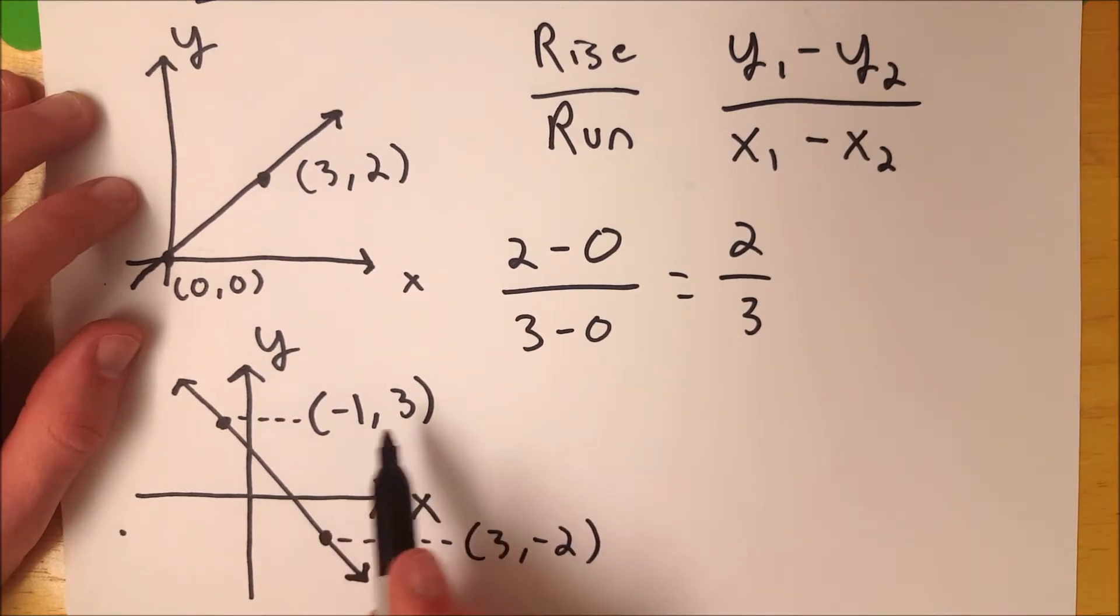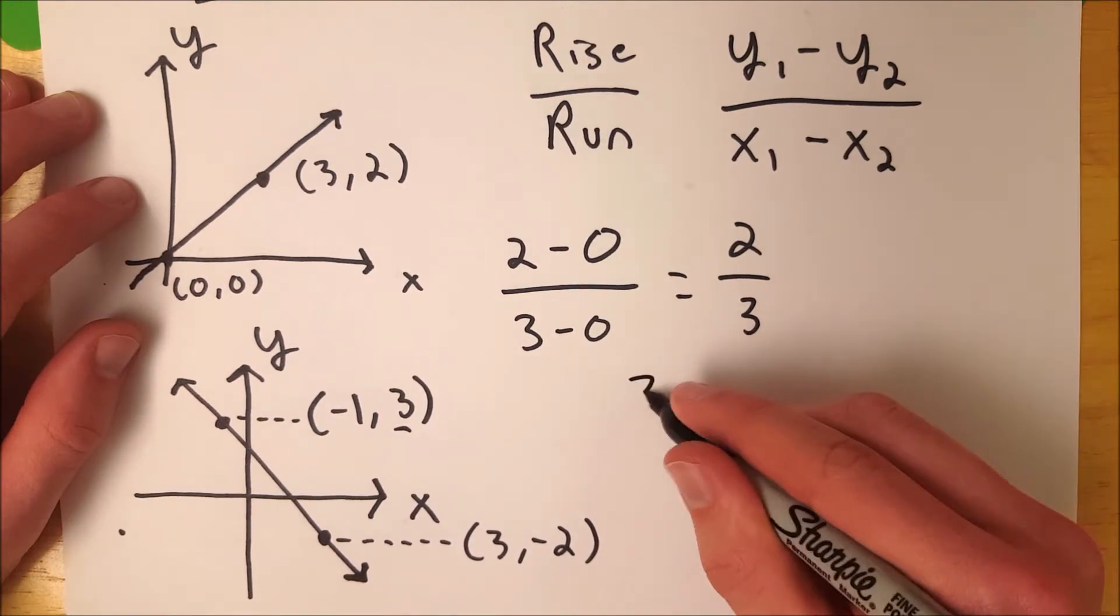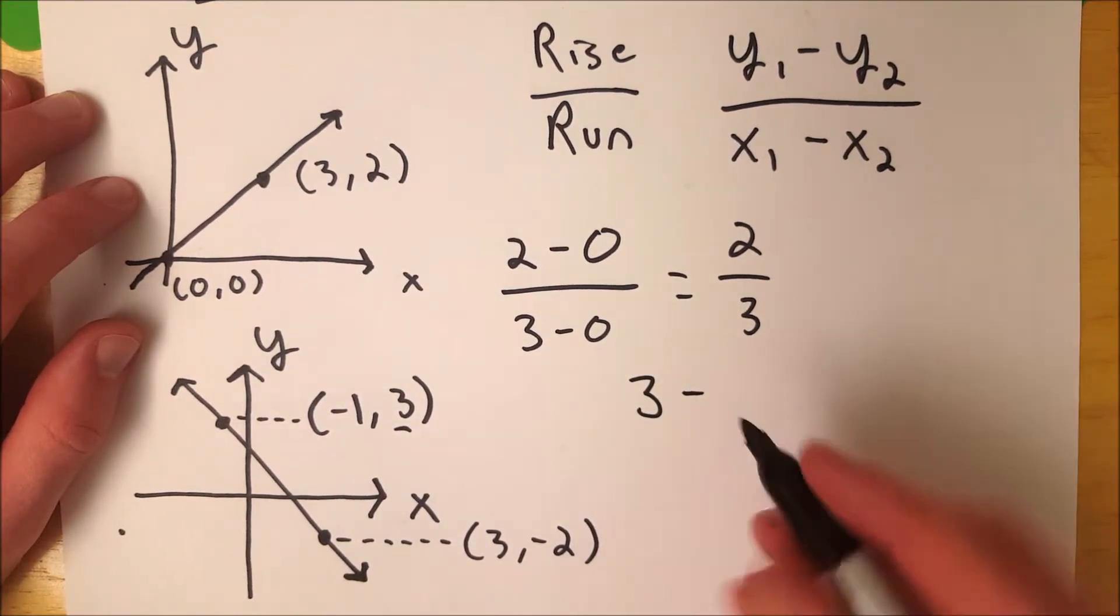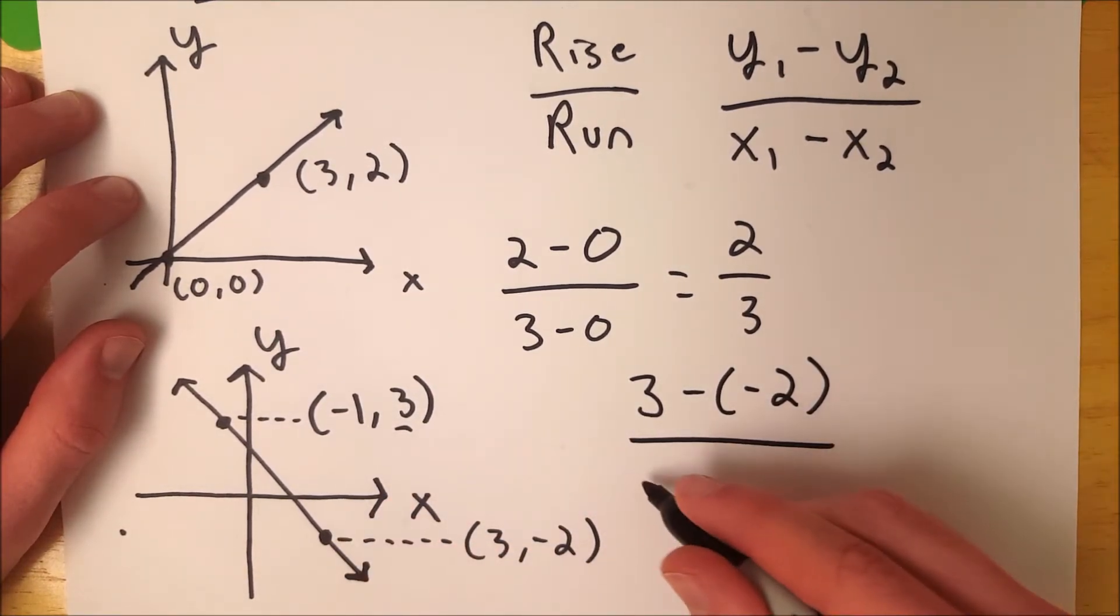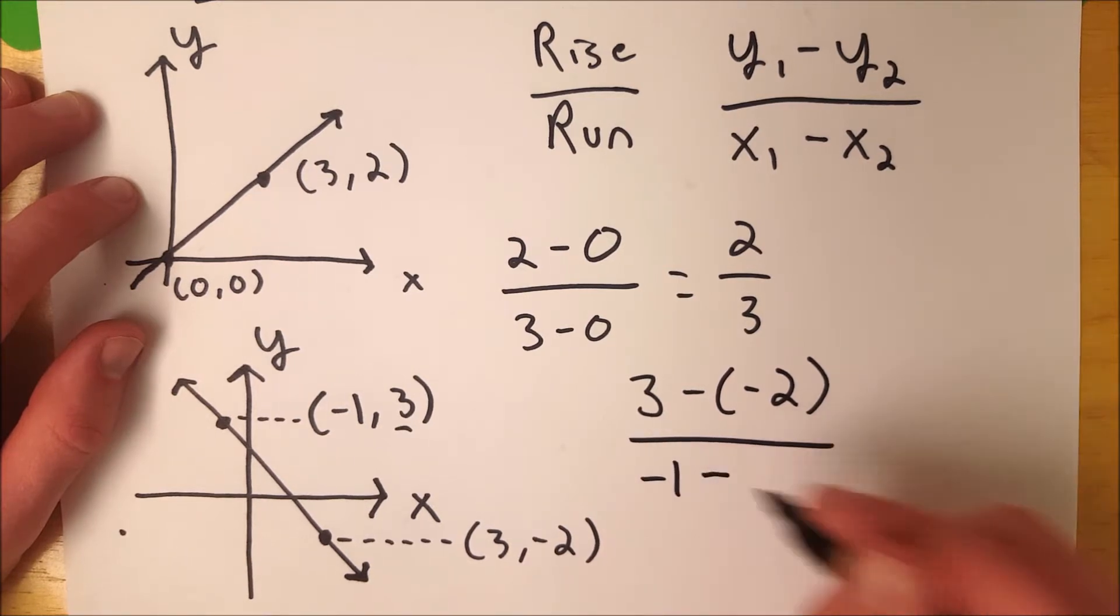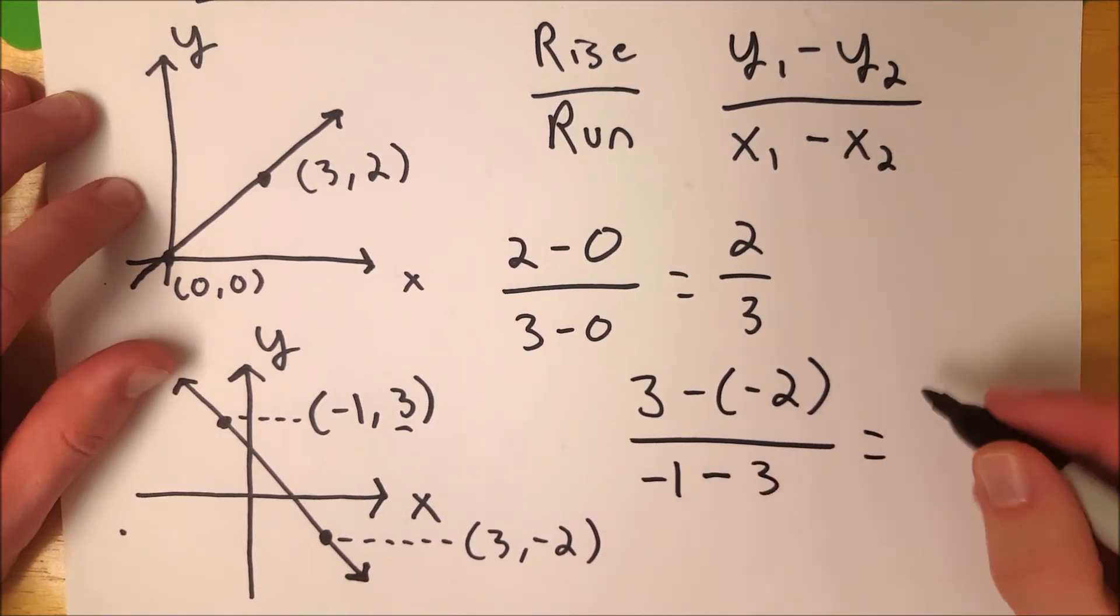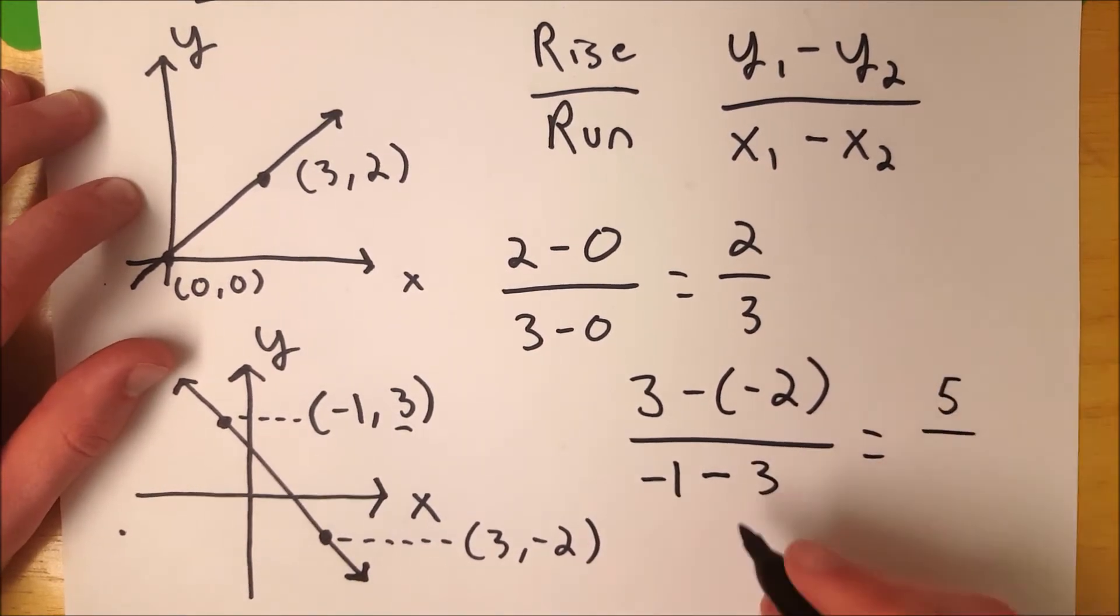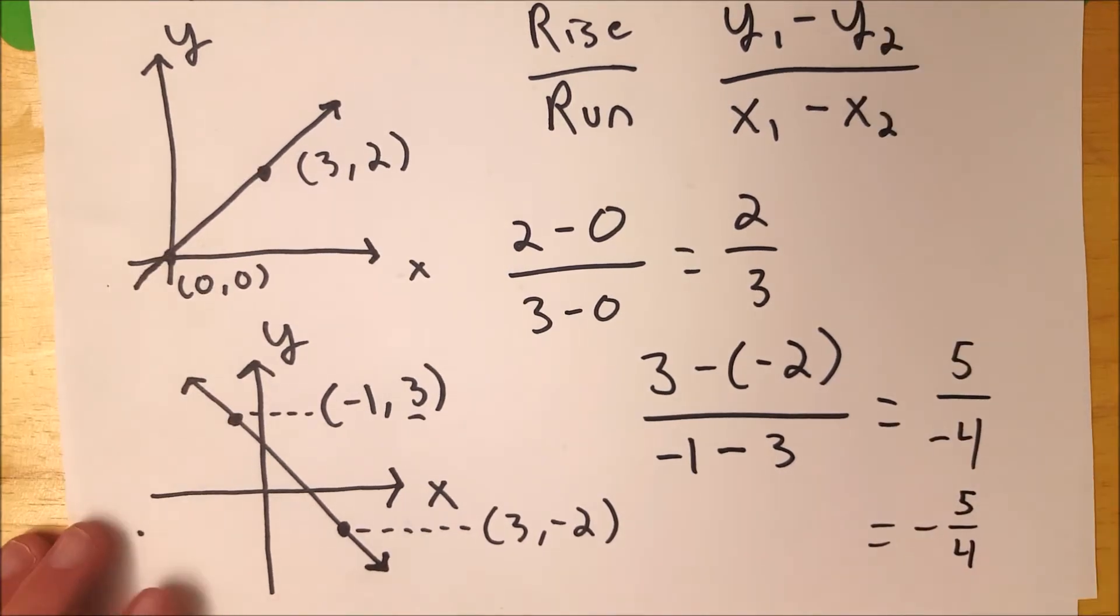So I'm just going to work with this being our first point. We're going to do y1 minus y2 over x1 minus x2. So our first y value is 3, and from that we're going to subtract our second y value, -2. And this gets divided by the first x value, -1, minus the second x value, which is 3. This is equal to 3 plus 2, which is 5, over -1 minus 3, which is -4. So our final answer is -5/4. And that's it. That's the slope of the line.